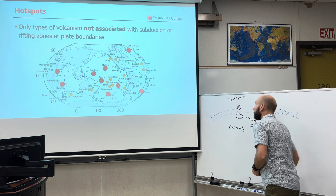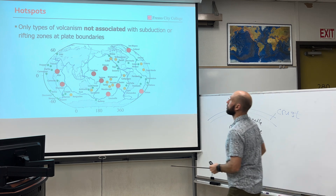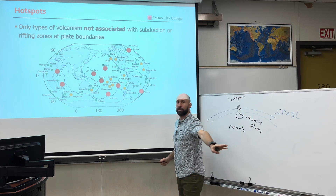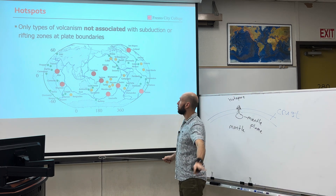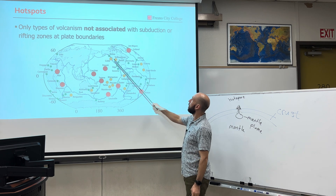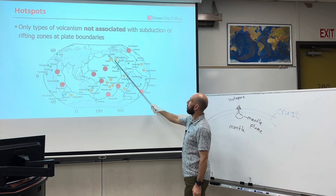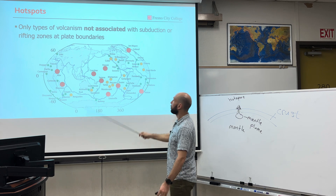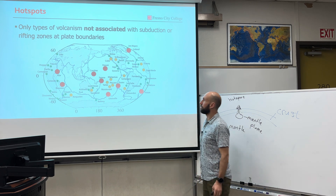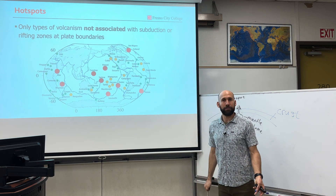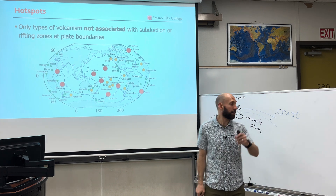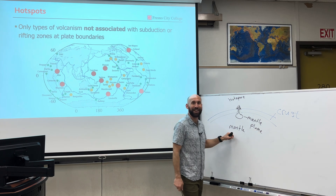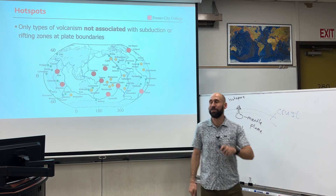We find hotspots all over the world, and we're going to do a case study on two specific ones: Hawaii and Yellowstone. But the global distribution of hotspots shows us that this is a relatively common feature because Earth's subsurface has a lot of heat to move.